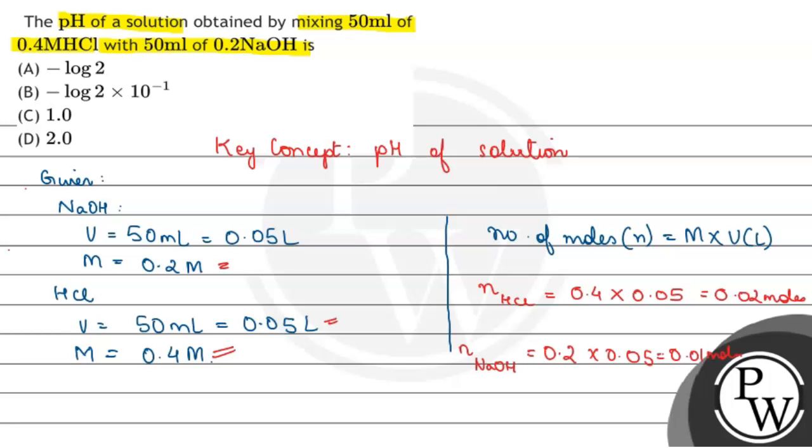Number of moles of HCl are greater, so 0.01 moles of HCl will be neutralized by NaOH.